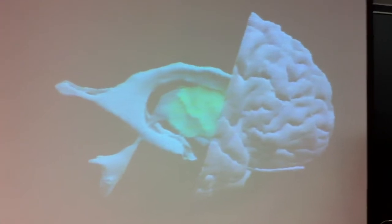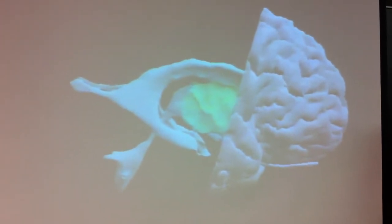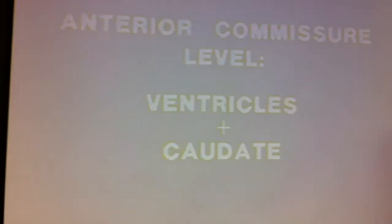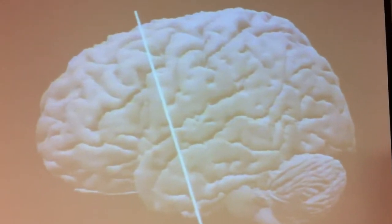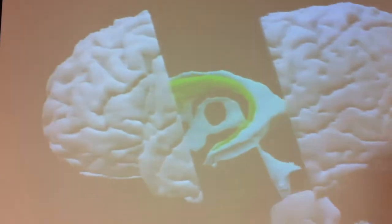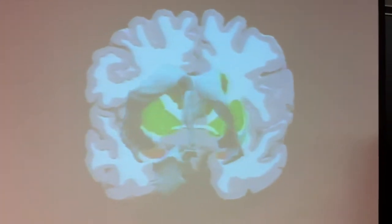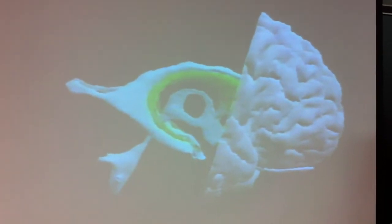And what's the blue? Lateral ventricle. Lateral ventricle. So that's the caudate nucleus, you can see it follows along the curvature of the lateral ventricles too.